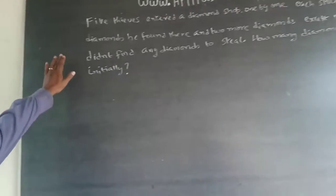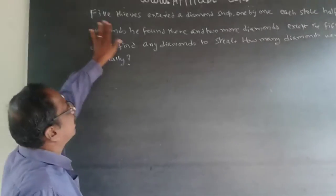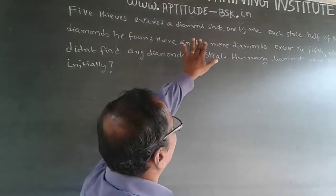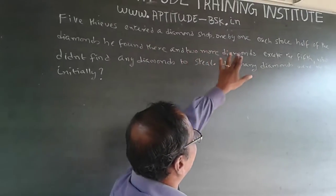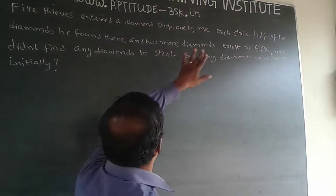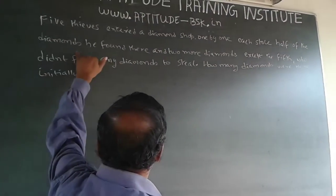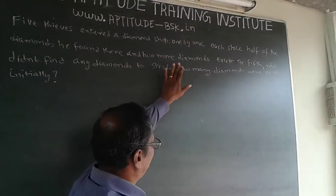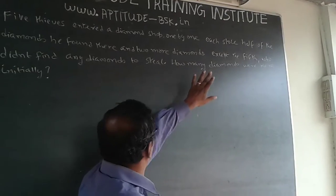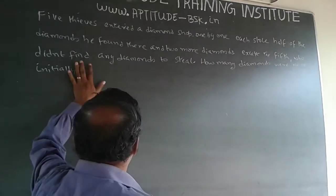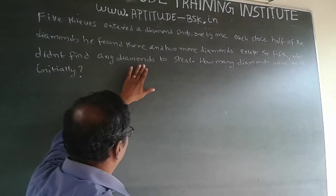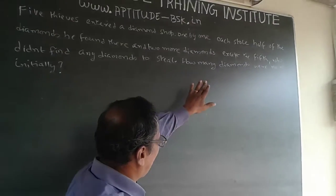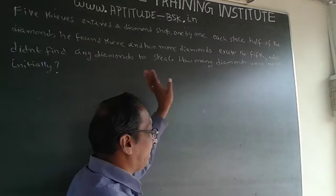The question is: why did thieves enter a diamond shop? One by one, each stole half of the diamonds they found there plus two more diamonds, except the fifth thief who didn't find any diamonds to steal. How many diamonds were there initially?